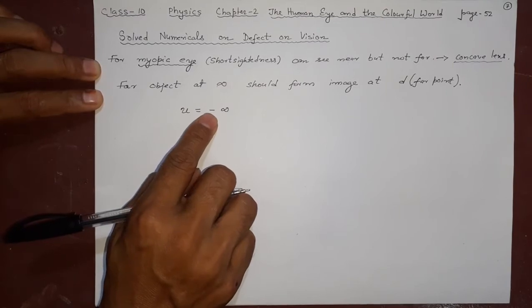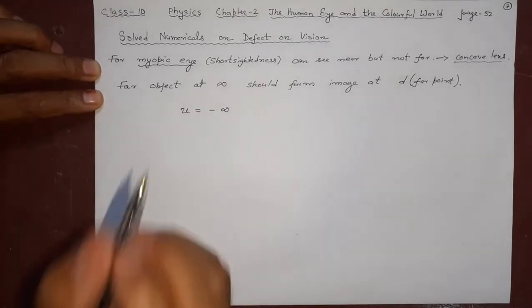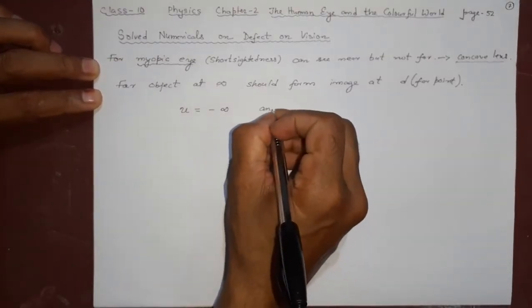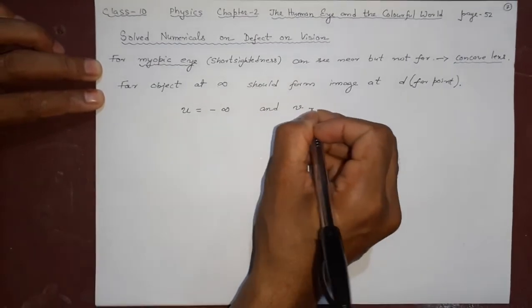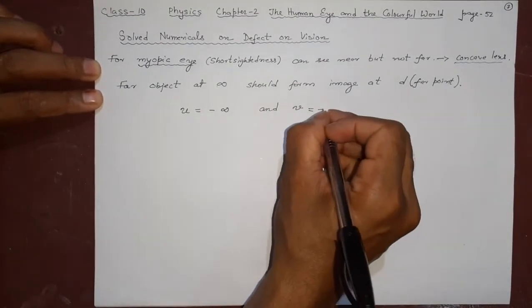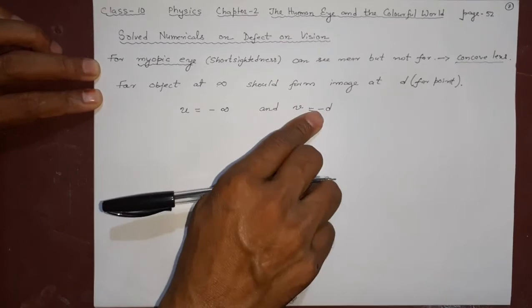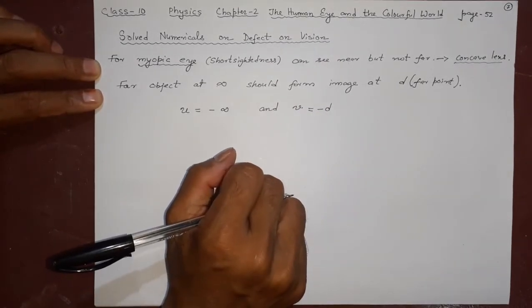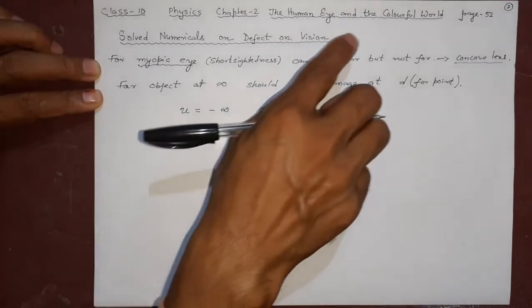The image should be formed at minus d. Why minus d? Because it is a concave lens I am using right now.